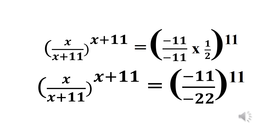Next, we multiply what we have inside the bracket on the right side. We have x over (x plus 11), raised to power (x plus 11), equals — multiplying numerators by numerators and denominators by denominators — minus 11 times 1 is minus 11, over minus 11 times 2 which is minus 22, all raised to power 11.